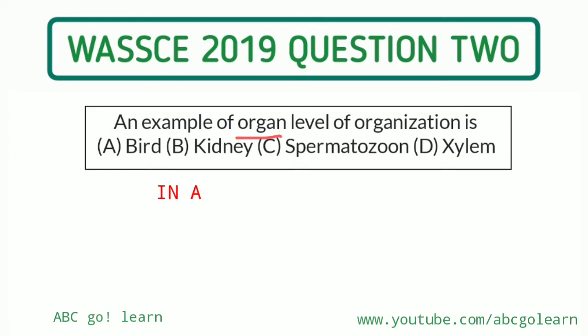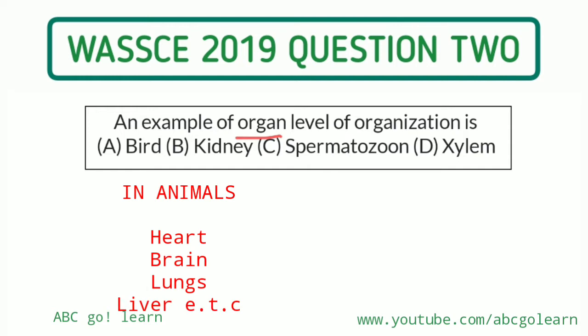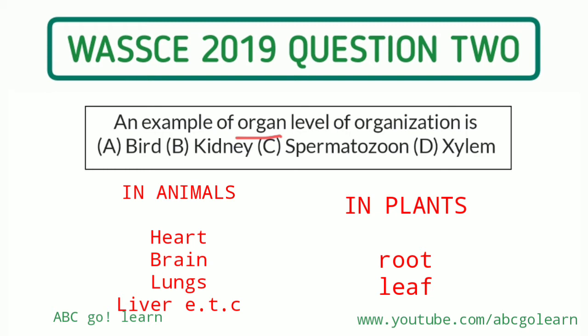Kidney is an organ in animals. We also have our heart as an organ, our brain as an organ, and our lungs as an organ. Those are examples of organs. We also have the liver as an organ.